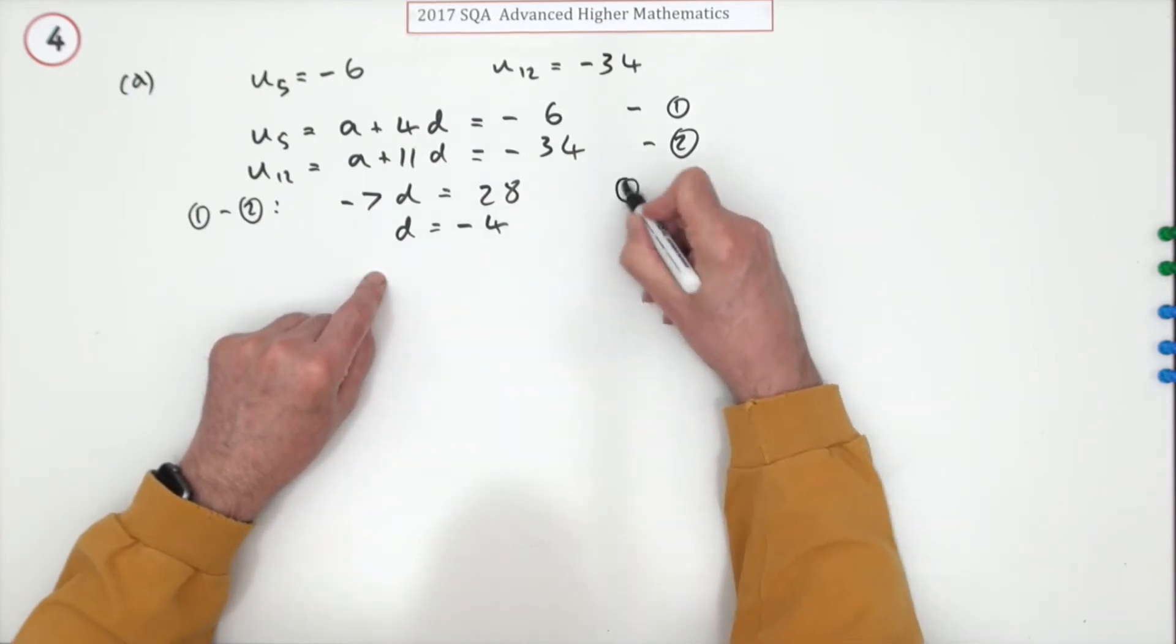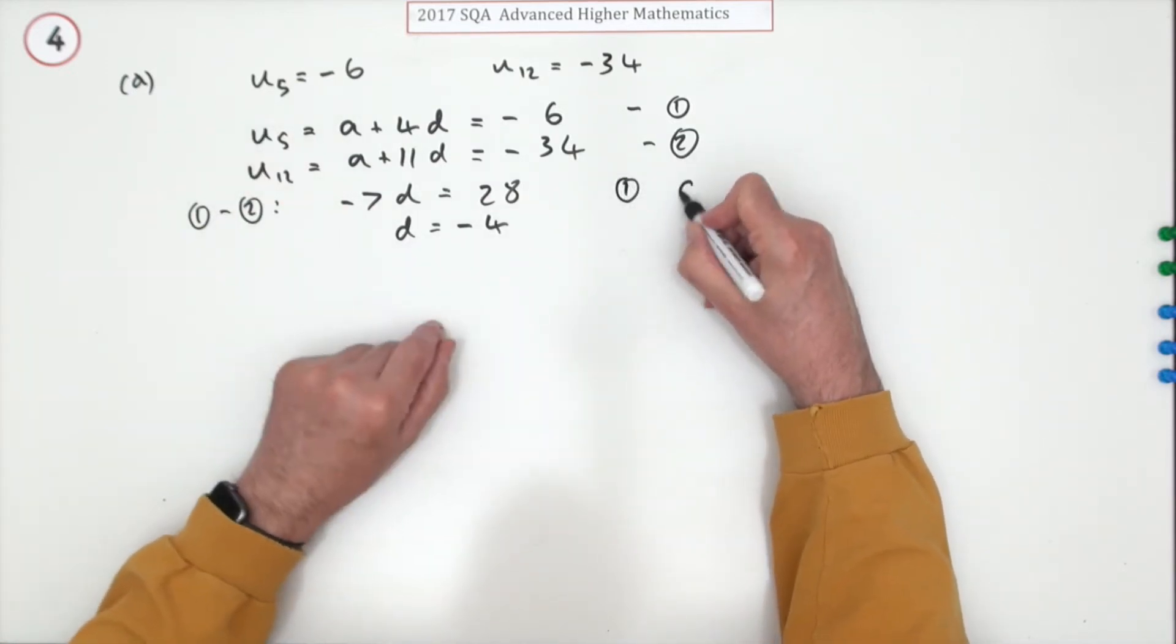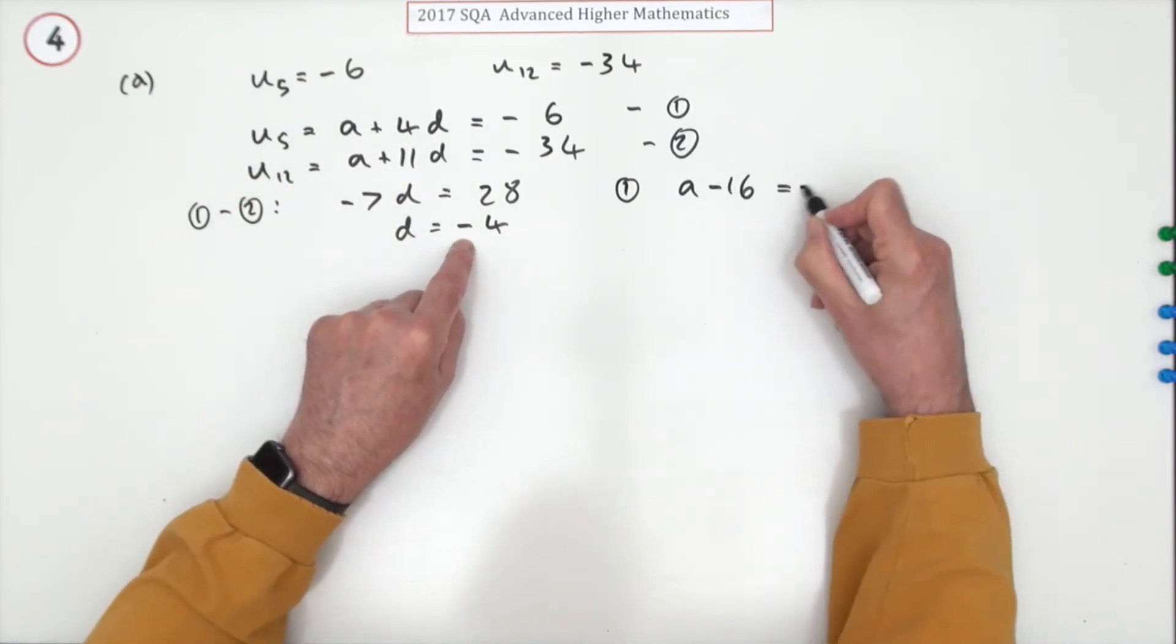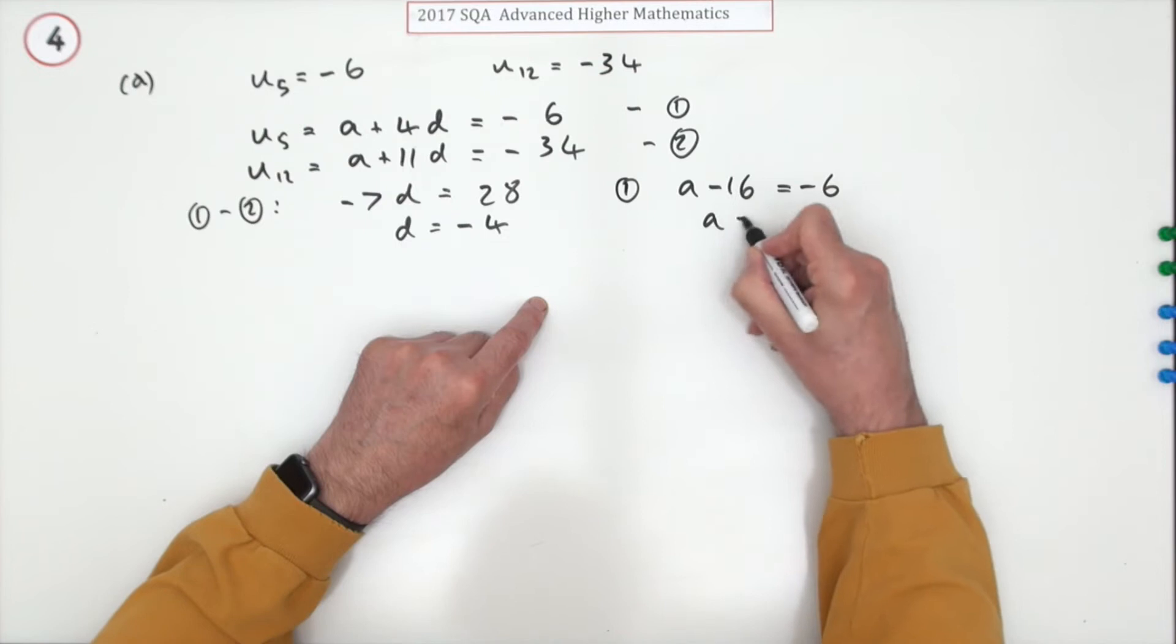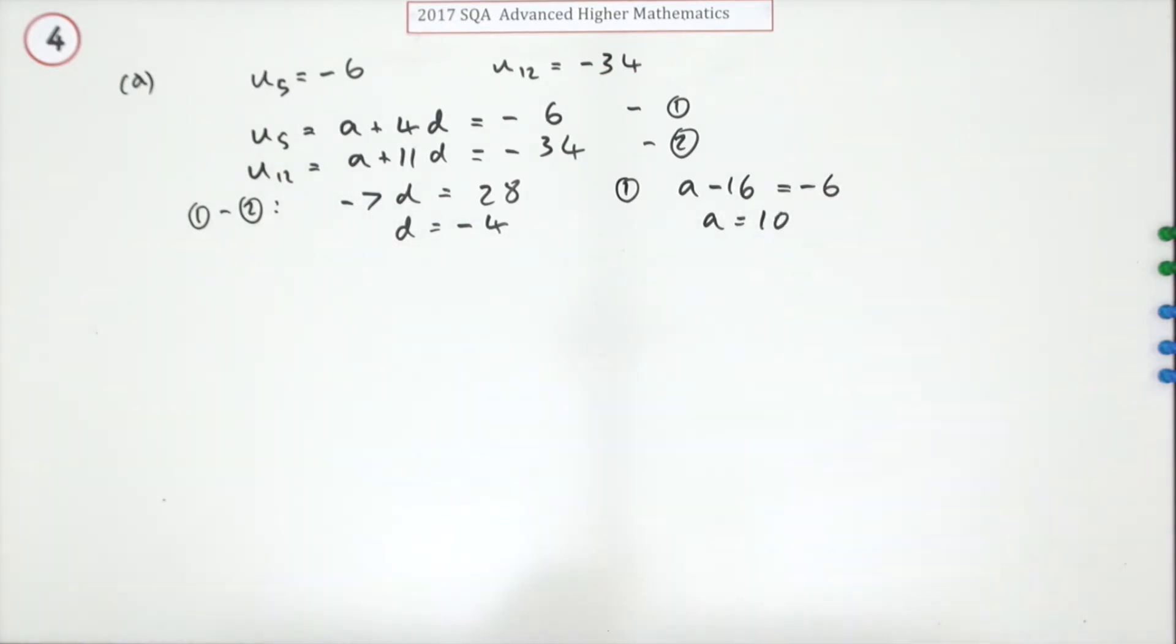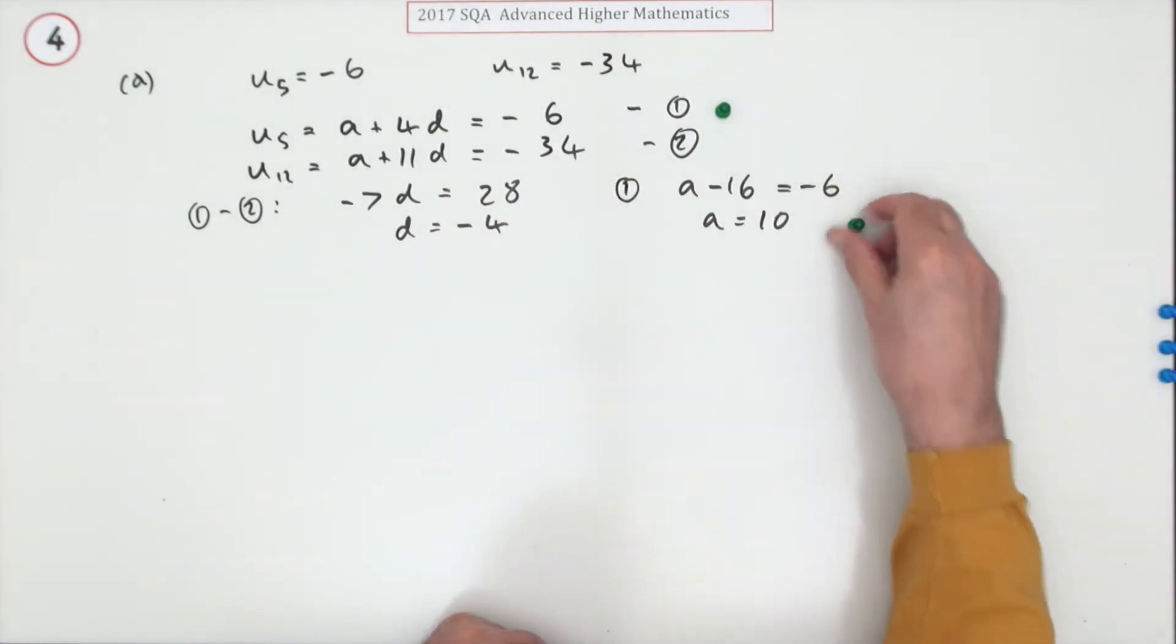You can see it's going down anyway, so d is negative four. Put it back into whichever one you like, put it back into one: a plus four lots of d, so a minus 16 is negative six, so a is going to be 10. You got one mark for forming the simultaneous equations and one mark for solving it to get a and d.